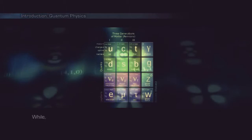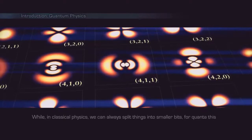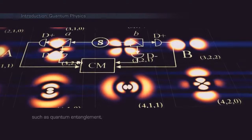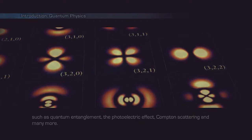While in classical physics we can always split things into smaller bits, for quanta this is impossible. As a result, the quantum world presents many unique phenomena that cannot be explained through classical laws such as quantum entanglement, the photoelectric effect, Compton scattering and many more.